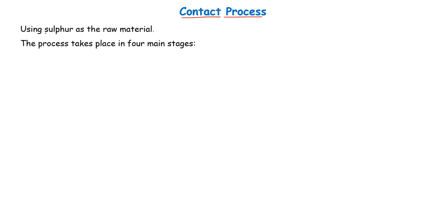In this case we are going to use sulfur as our main raw material and we are going to outline the four main stages of this process.